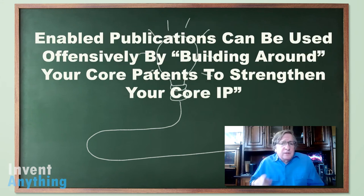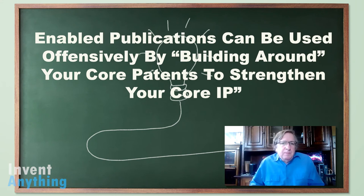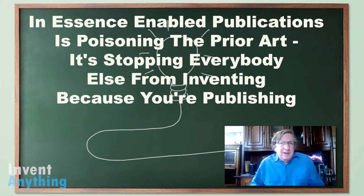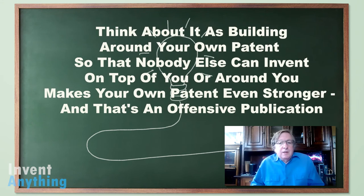Enabled publications can be used offensively. Consider that you have a well with wonderful water, and other people around you also have wells selling water. Imagine if you poisoned everybody else's water and yours was the only well that wasn't poisoned. In essence, Enabled Publications is poisoning the prior art — stopping everybody else from inventing because you're publishing. Think about it as building around your own patent so nobody else can invent on top of or around you, making your own patent even stronger. That's an offensive publication.